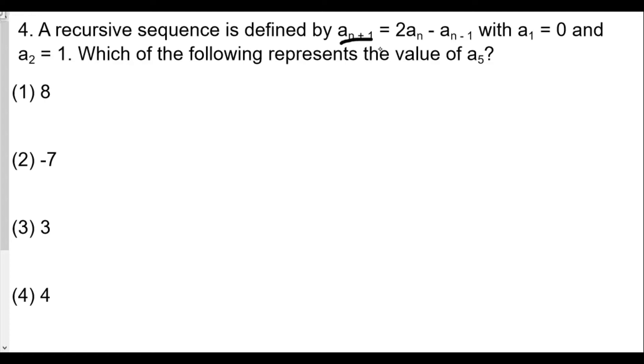To get a3, we have to let n equal 2. When n equals 2, a(2+1) equals 2 times a2 minus a(2-1), which really means we're going to get a3 is equal to 2 times a2 minus a1. Now, a2 is 1, so 2 times a2 is 2 times 1 minus a1 is 0, so we're going to get 2. So we get a3 equals 2.